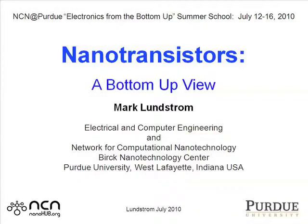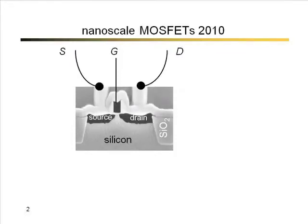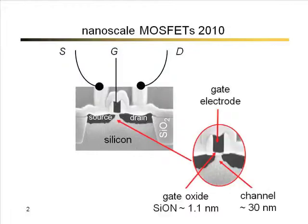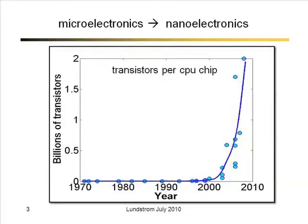So it's nanotransistors. As Professor Dada mentioned, transistors are getting very, very small these days. This is an SEM cross-section of a typical transistor from a few years ago. Today, current-day technology has channel lengths on the order of 30 nanometers — the physical channel length. So these devices are getting incredibly short, much shorter than we imagined a few years ago that they could even be manufactured. They're true nanoscale devices.